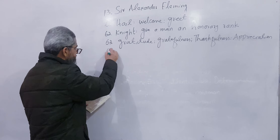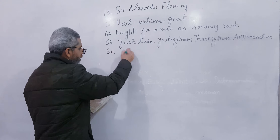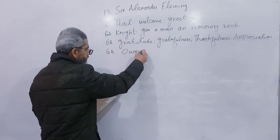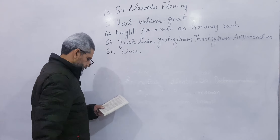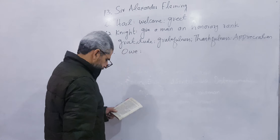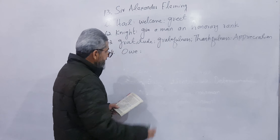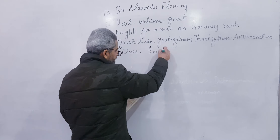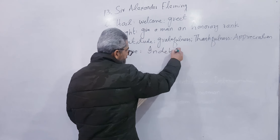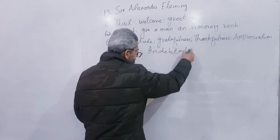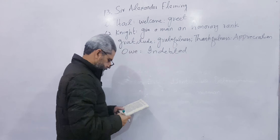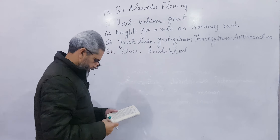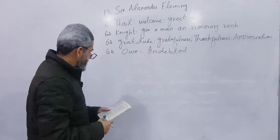Number 64: Owe, O-W-E. It means karzdar hona, maqrooz hona (to be in debt). Write indebted.